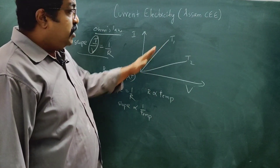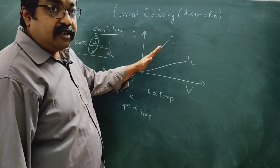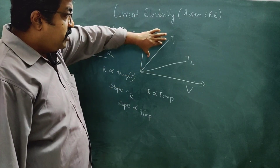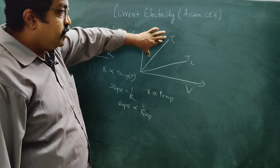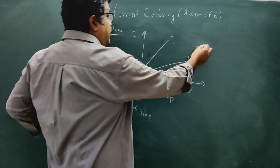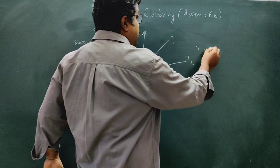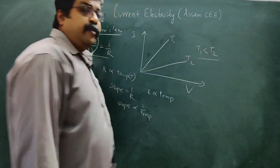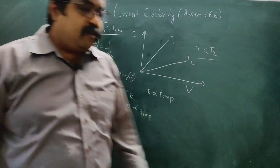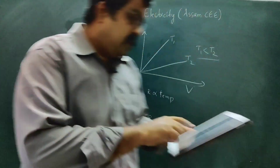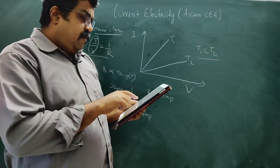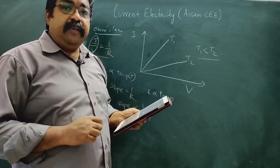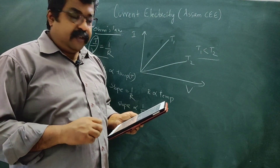Since the slope is inversely proportional to temperature, looking at the slopes of T1 and T2, we conclude that T1 is less than T2. Option B is the correct answer.